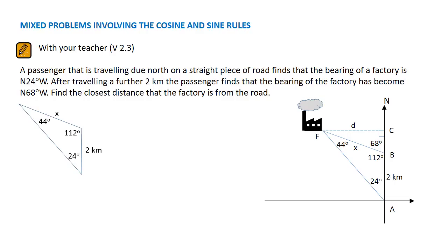X over the sine of the angle opposite it, 24 degrees, is equal to 2 over the sine of the angle opposite it, 44 degrees. Multiply both sides by the sine of 24 degrees and use the calculator to find X.